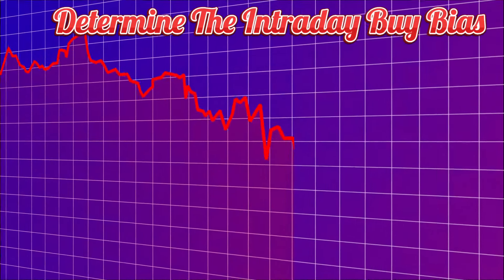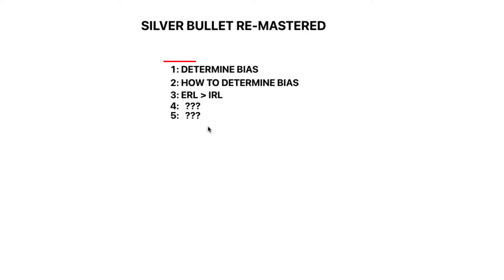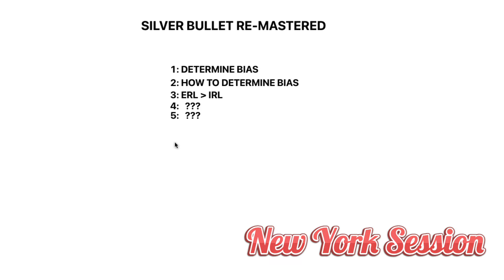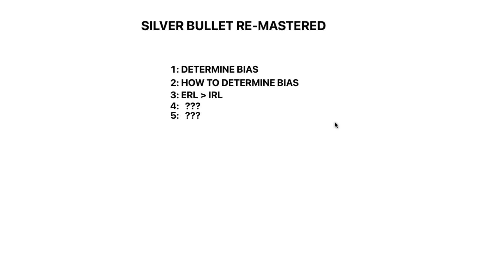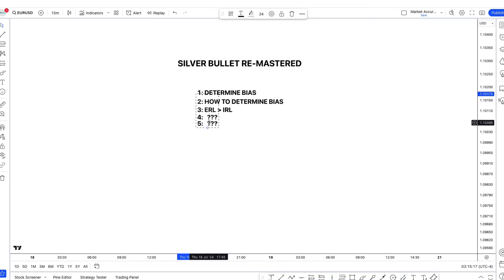And I'm going to teach you each and everything in this video. So the number one thing I'm going to teach you is how to determine the intraday bias. For Silver Bullet, we need to know the intraday bias — that is very important. We need to know where the price will head to during the New York session. Then we're going to use URL to IRL methodology later in the video.